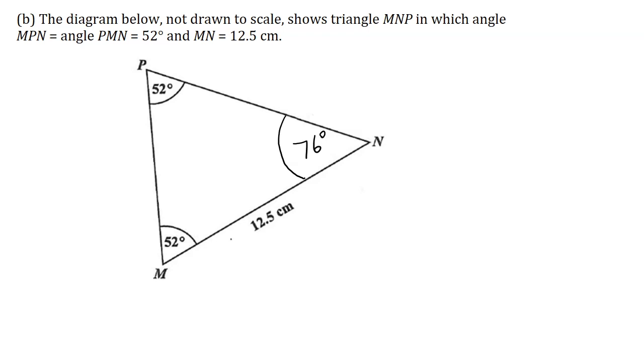It means that this side P, which is opposite the angle, P here equals 12.5 centimeters, and M is also equal to 12.5 centimeters. Our angle here, which is between the two sides M and P, is 76 degrees. So I am going to use that to rewrite the formula.